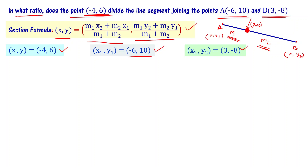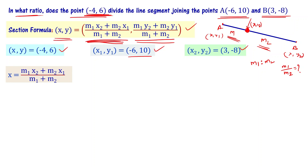We want to find M1 is to M2. For that, we only need to use the x-coordinate equation: x equals M1 x2 plus M2 x1 divided by M1 plus M2. Rearranging, we get M1 plus M2 times x equals M1 x2 plus M2 x1. We know x is minus 4, x2 is 3, and x1 is minus 6. Substituting: minus 4 times M1 plus M2 equals 3 times M1 minus 6 times M2.